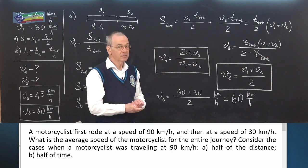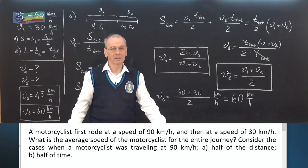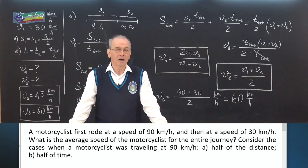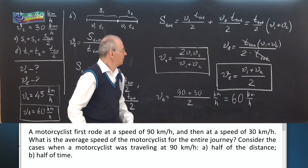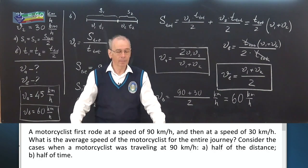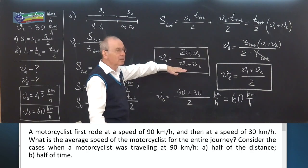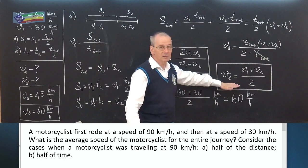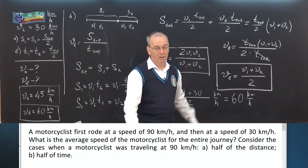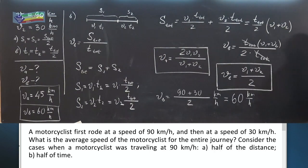Pay attention to the fact that these two average speeds are calculated using absolutely different formulas — not the middle value for Case A, but the middle value for Case B. The problem is solved.